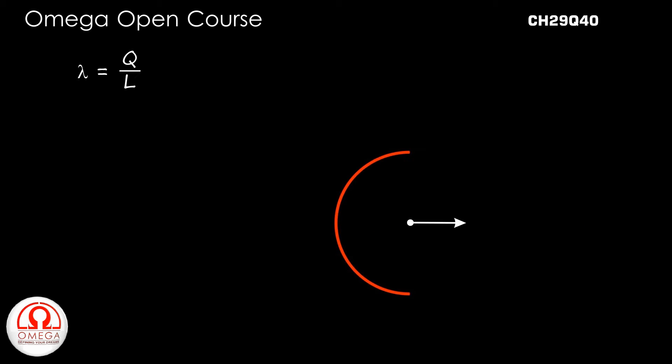The linear charge density of the rod is Q by L. If R be the radius of the semicircle formed, then pi into R must be equal to L, or R is equal to L by pi.